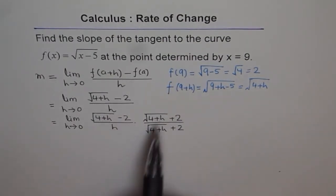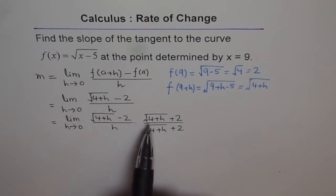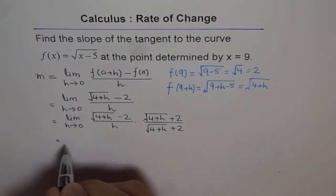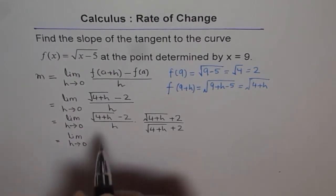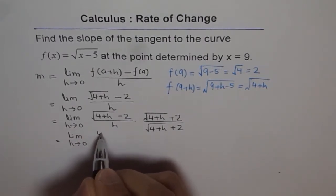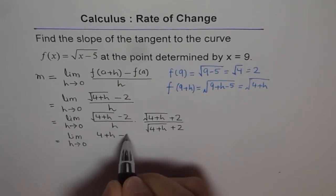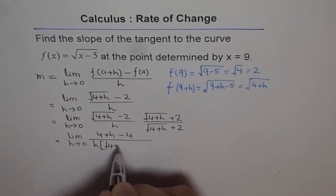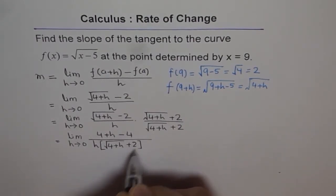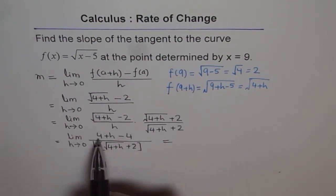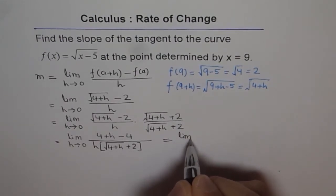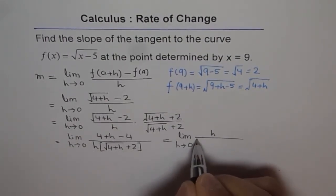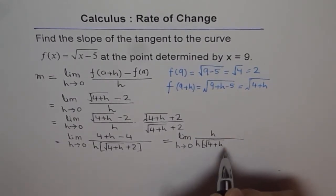Multiplying the numerators gives us a difference of squares: (x − y)(x + y) = x² − y². So we get the limit as h approaches 0 of [(4 + h) − 4] over h times [√(4 + h) + 2]. Since 4 − 4 = 0, the numerator simplifies to h, leaving h over h times [√(4 + h) + 2].